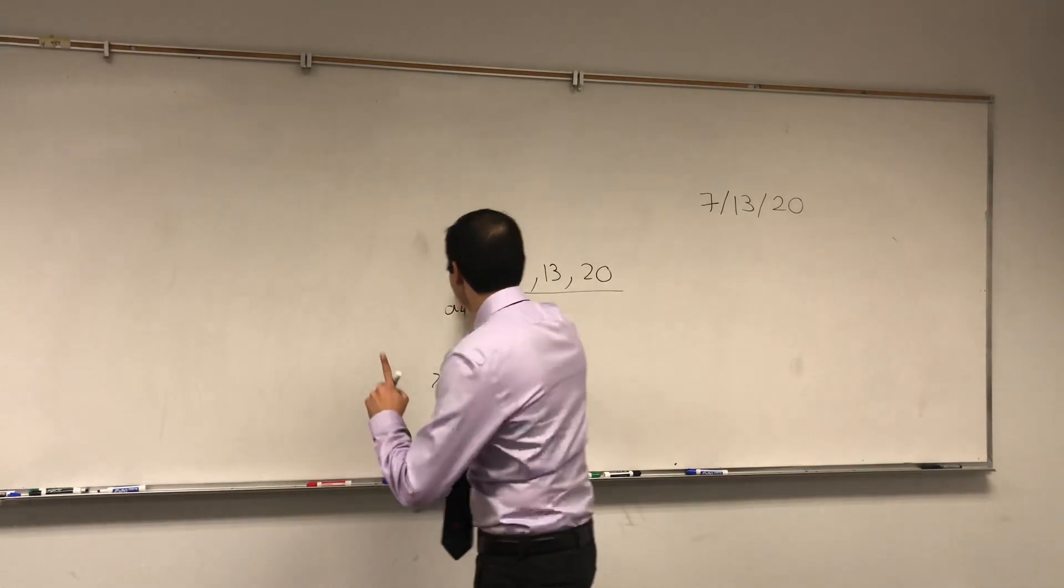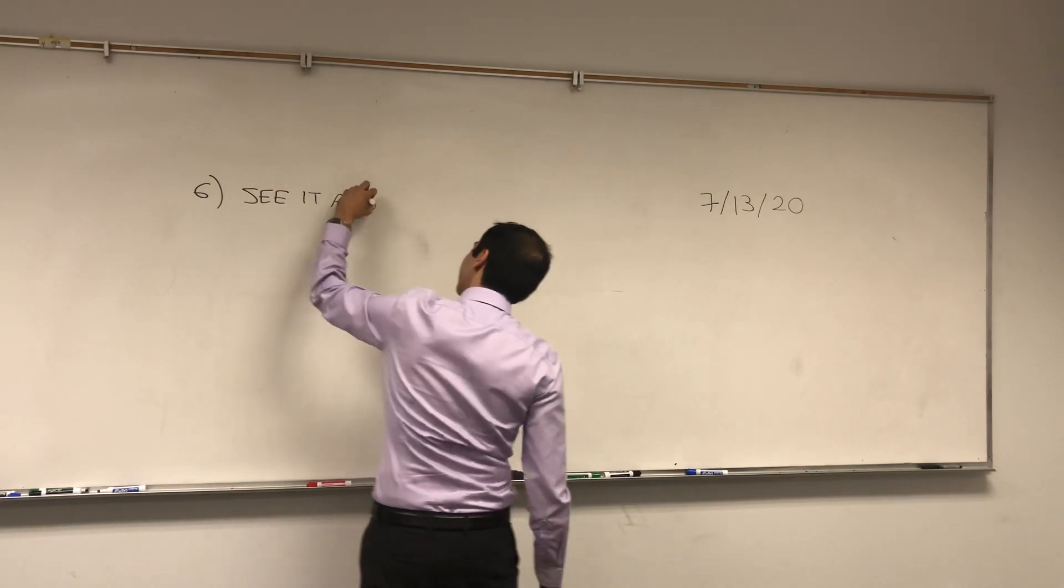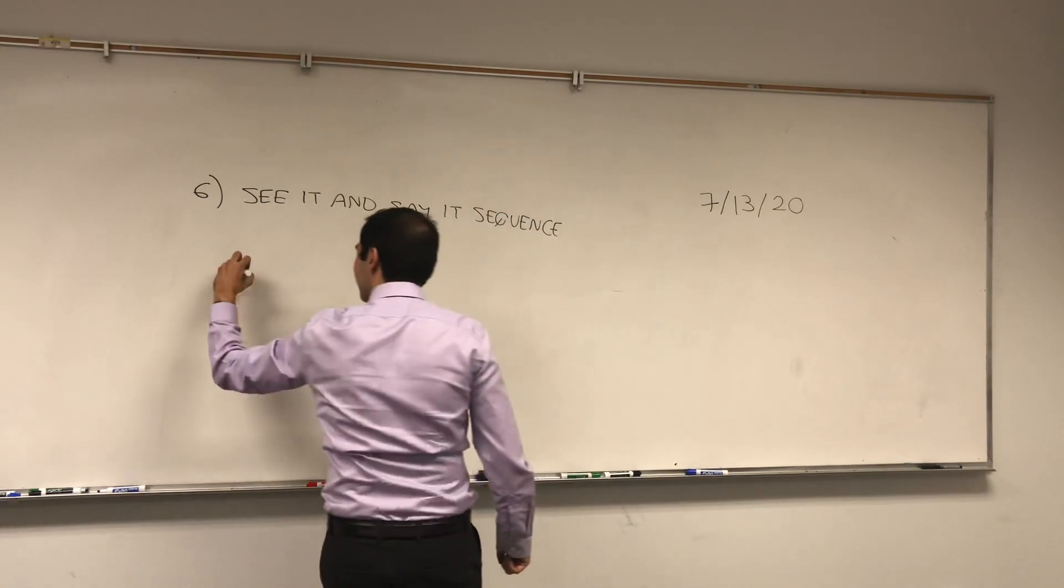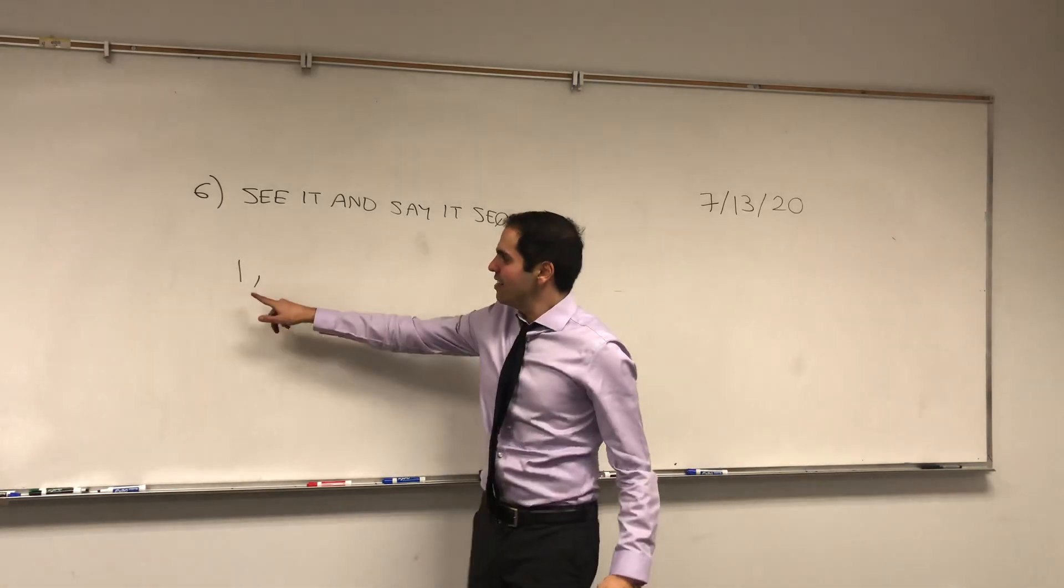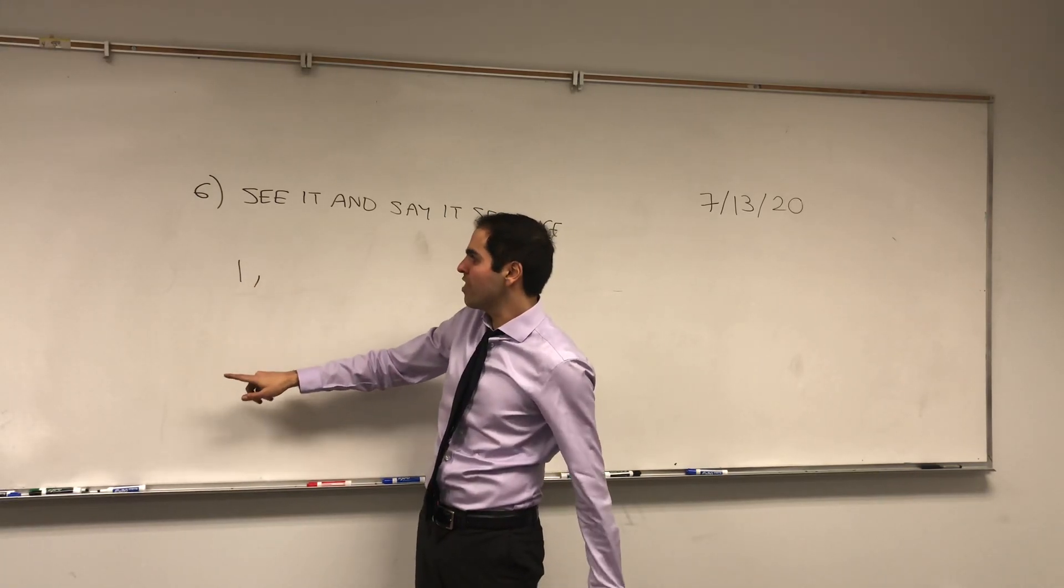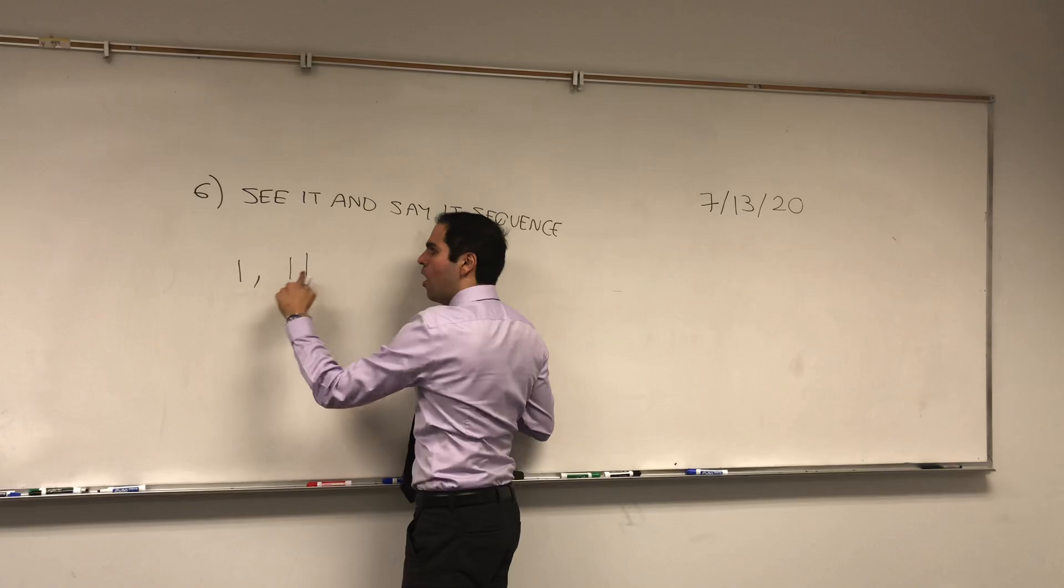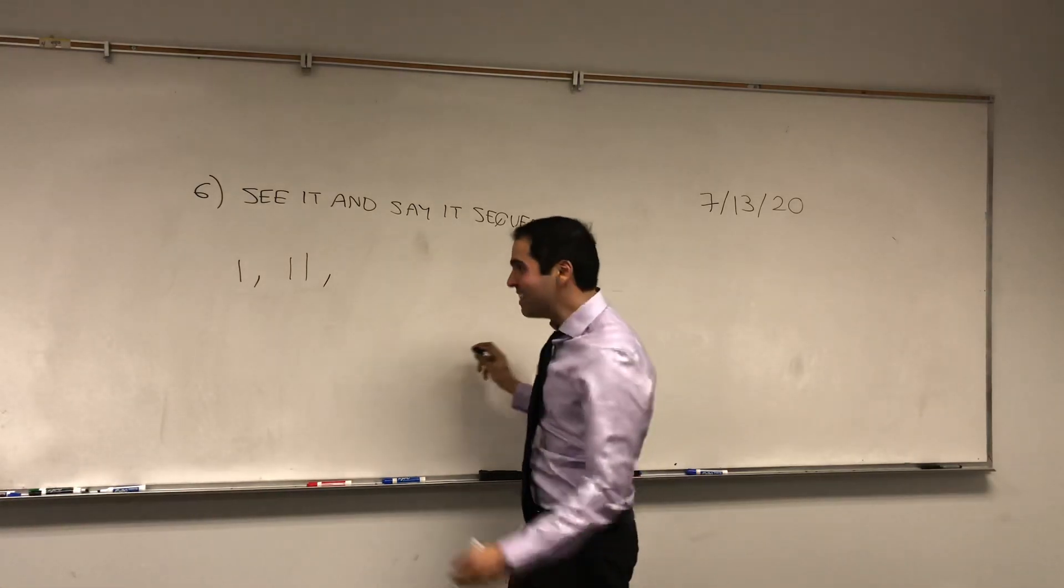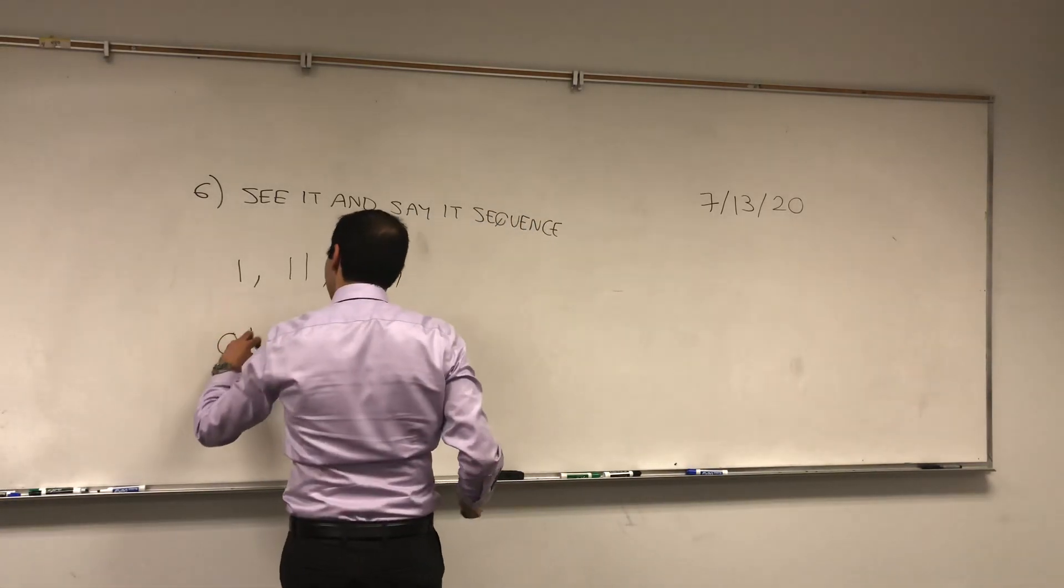Last but not least, the one that really surprised me, it's what's called the see it and say it sequence. Let's see how to do this. It took me a while to get it, okay? So that's a bit hard to see. But you start with one. And you literally write down what you're saying. How many ones are there? Well, there's one one. One occurrence of one, so one one. Next, how many ones are there? Well, there are two ones. So it's two one. Which, by the way, gives you the next see it and say it date.